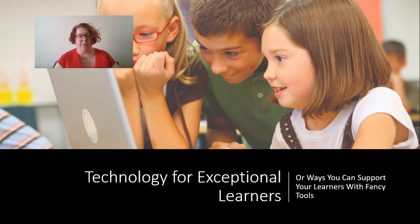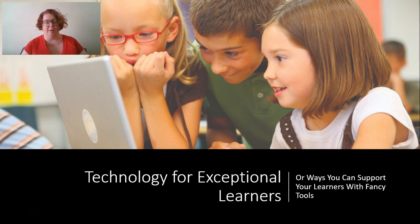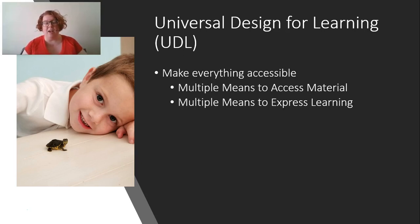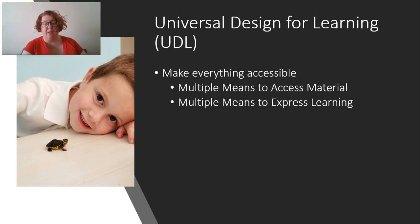Let's talk about technology for exceptional learners. The first thing to discuss is Universal Design for Learning, or UDL. UDL is a way a teacher can organize and set up the classroom so that everything is already accessible for the multitude of needs and exceptionalities that might one day be in the classroom. The idea is to have multiple means of accessing material and multiple means of expressing learning — ideally, you're not having to make a lot of modifications for individual students, but allowing everyone to access it at their level.